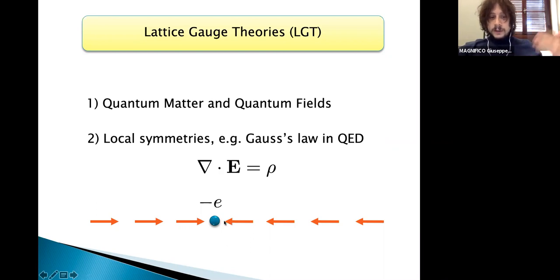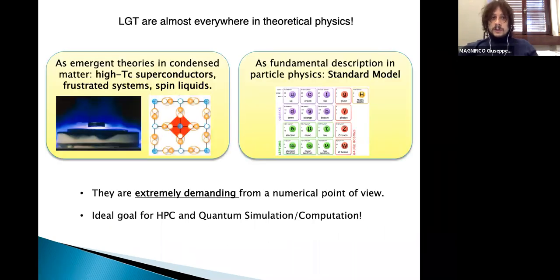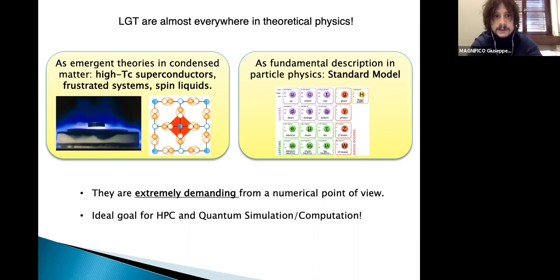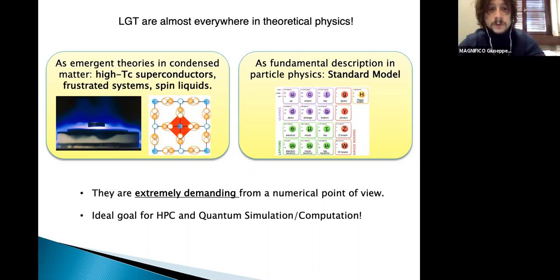What makes lattice gauge theories completely peculiar is the presence at the Hamiltonian level of local symmetries — symmetries that have to be satisfied at each point of your space in one, two, or three dimensional lattices. The Gauss law in quantum electrodynamics is an example of a gauge symmetry generator. It relates the charge distribution to the electric field configuration generated by that distribution. If an electron moves from position X to X plus one, the electric field degrees of freedom must change to restore this local constraint. Lattice gauge theories are almost everywhere in theoretical physics: they emerge at low energy in condensed matter — describing high-temperature superconductors, frustrated systems, or spin liquids — and at very high energy, gauge theories are the fundamental blocks for describing our universe. The standard model combines quantum electrodynamics, quantum chromodynamics, and the weak interaction.